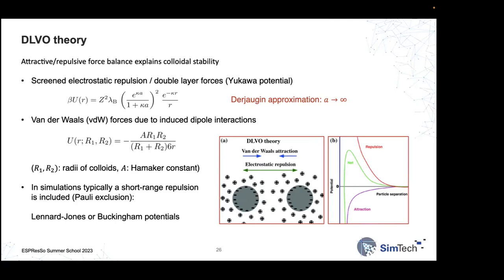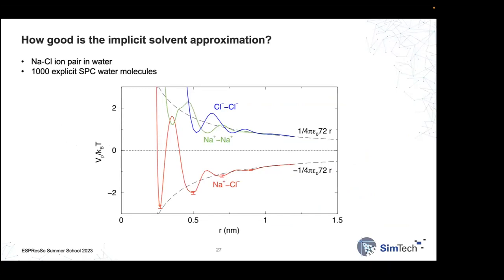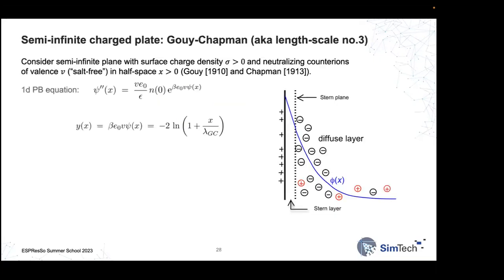We can ask: how good is this implicit solvent approximation? Simulation results for chloride-chloride, sodium-chloride, and sodium-sodium interaction energies show that the coarse-grained model is reasonable at length scales around a nanometer. For finer details, a more atomistic description is needed. One of the few analytical solutions of Poisson-Boltzmann theory was first obtained by Gouy and Chapman in 1910: the solution for a single charged plate in the salt-free limit.